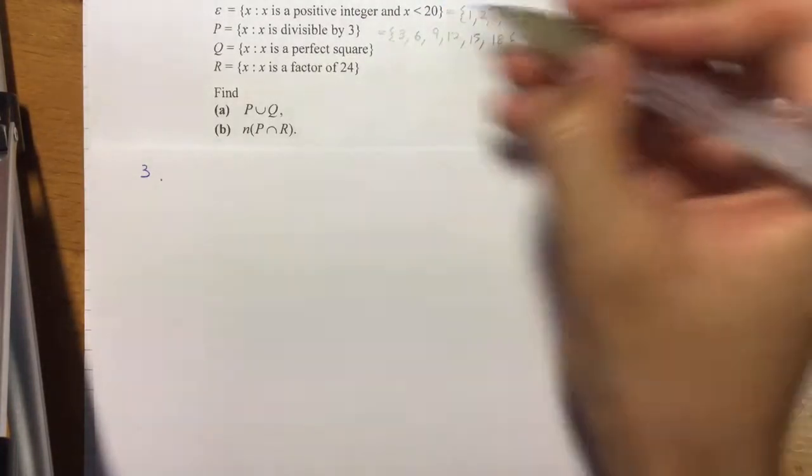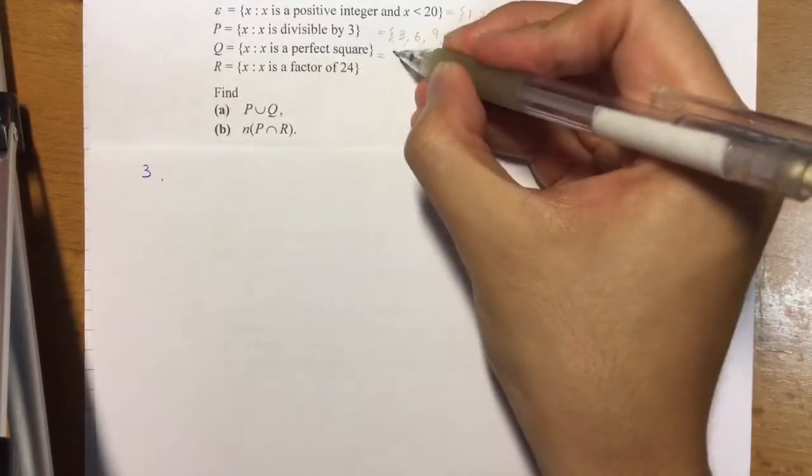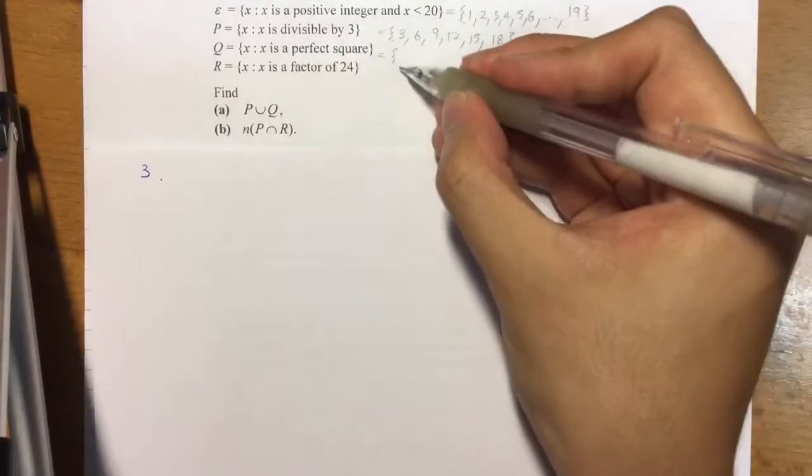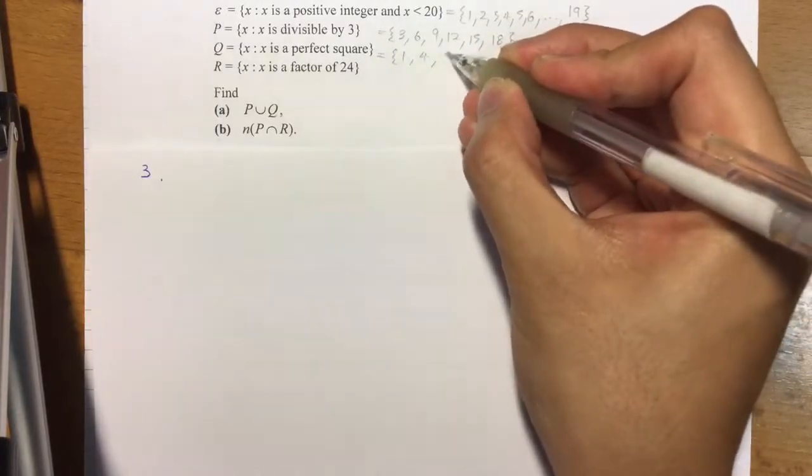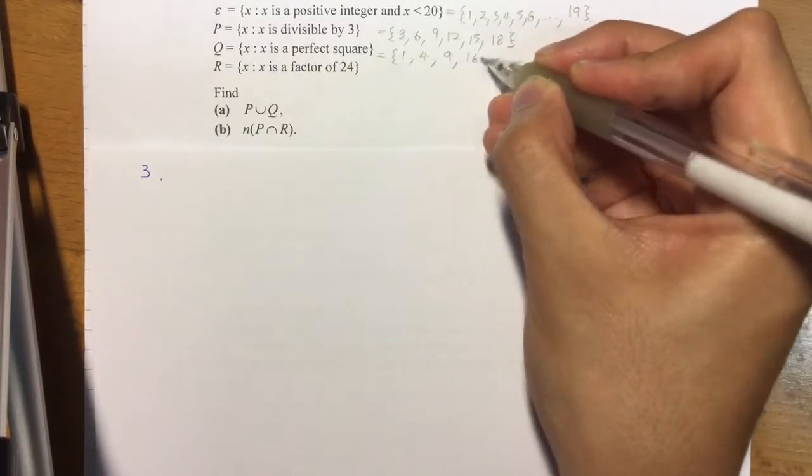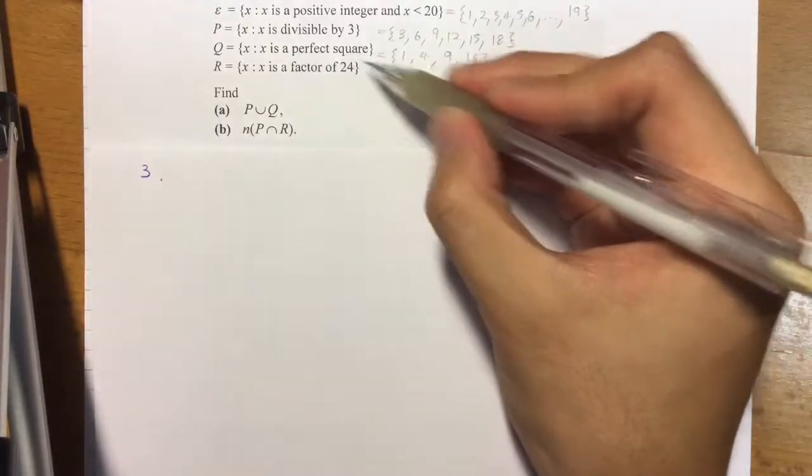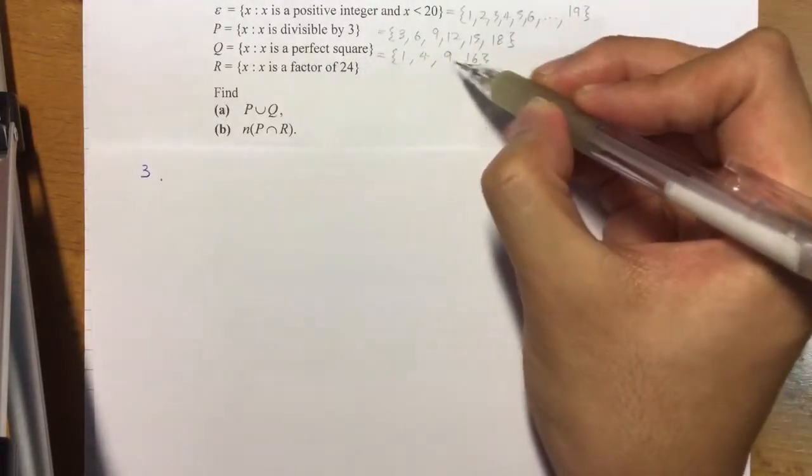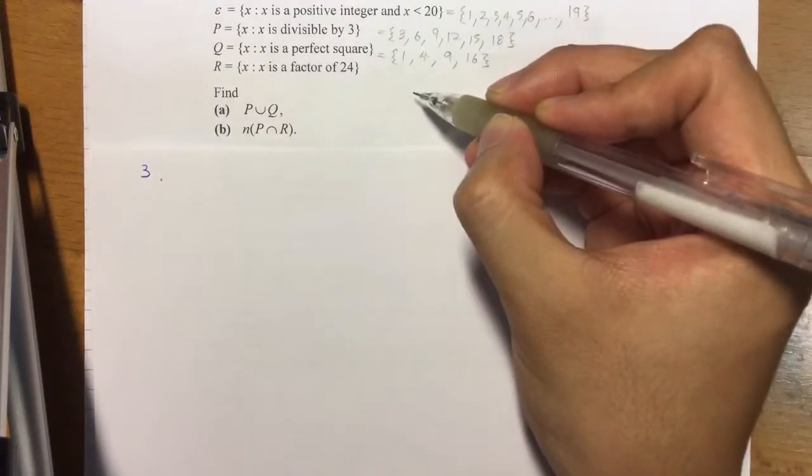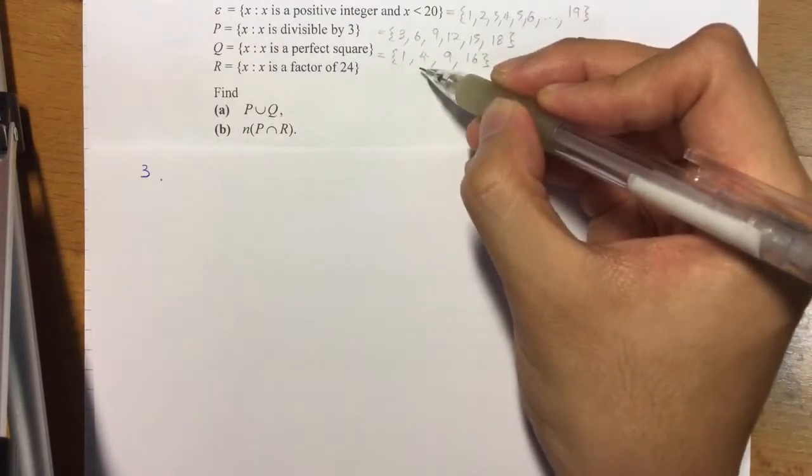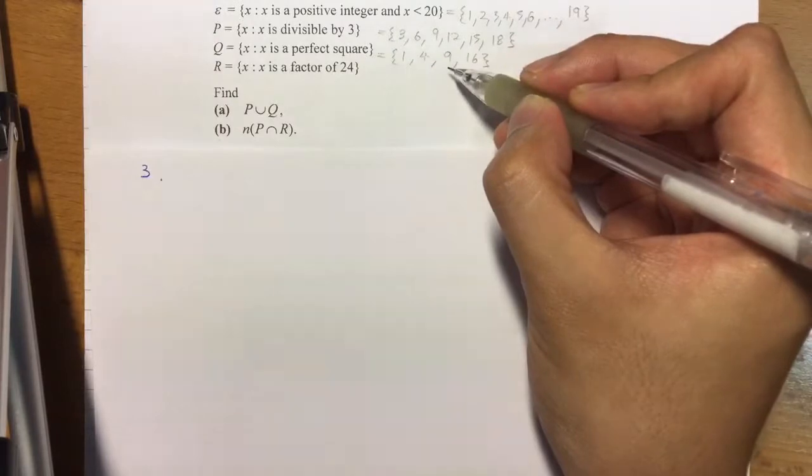Next, Q, a perfect square. What are such numbers? 1, 4, 9, and 16. So what is the definition of a perfect square? It means that these numbers, when I try to square root them, I will still get back a whole number. So I square root 4, I'll get 2; square root 9, I'll get 3; square root 16, I'll get 4.